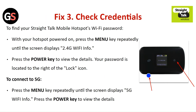Fix 3: Check the credentials. To find your Straight Talk mobile hotspot Wi-Fi password, with your hotspot powered on, press the menu key repeatedly until the screen displays 2.4G Wi-Fi info. Press the power key to view the details. Your password is located to the right of the lock icon. To connect to 5G, press the menu key repeatedly until the screen displays 5G Wi-Fi info, then press the power key to view the details.